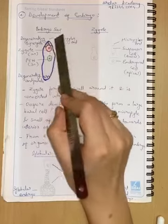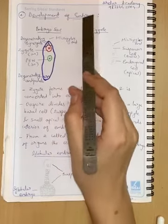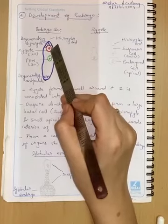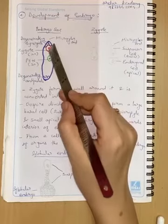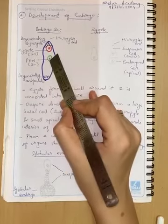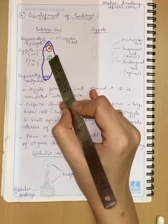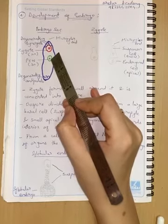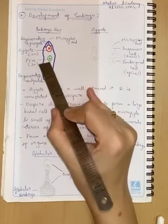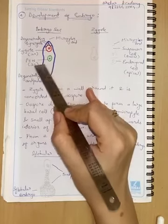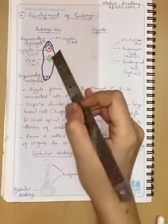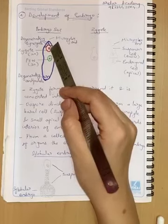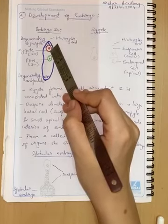So synergids help in embryo formation. Since the egg cell and the male gamete have fused, zygote is formed. So it becomes haploid to diploid. In the center, two haploid nuclei fuse to form secondary nucleus. With that, the second male gamete merges to form primary endosperm nucleus, which is triploid. From this, endosperm tissue will form.